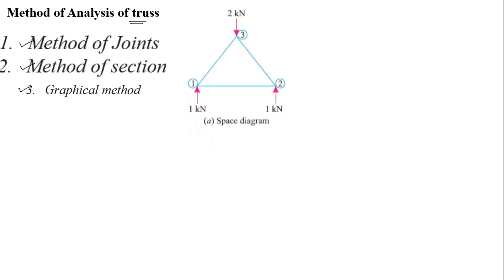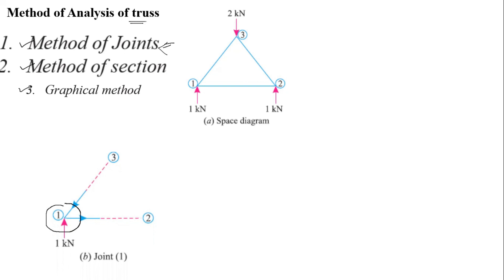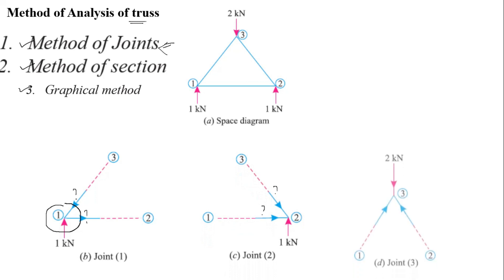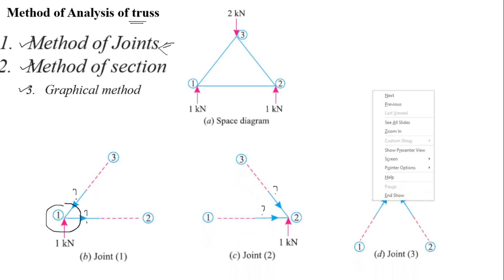Let us discuss about the method of joints. In this method, we have to take individual joints and solve joint by joint. For example, we take the first joint and solve to determine two parameters, then take the second joint and determine two more, and so on.